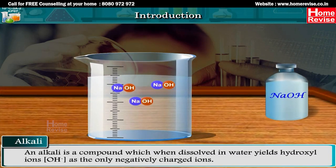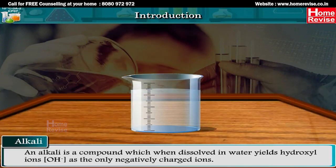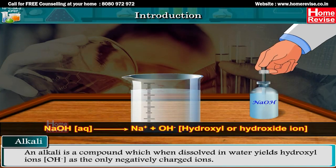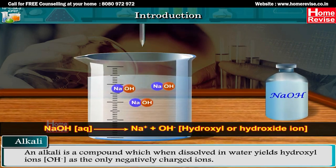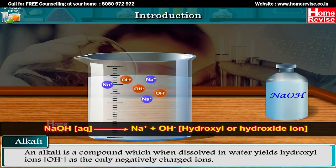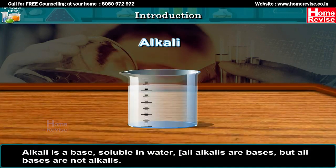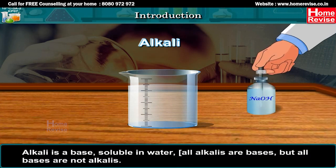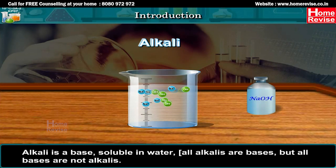An alkali is a compound which, when dissolved in water, yields hydroxyl ions OH- as the only negatively charged ions. NaOH(aq) reversibly gives Na+ plus OH- (hydroxide ion). An alkali is a base soluble in water. All alkalis are bases, but all bases are not alkalis.